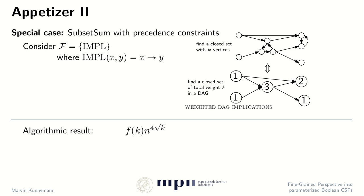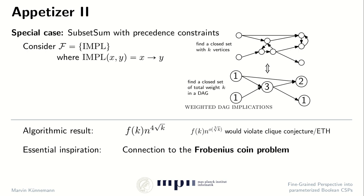For this problem we see a much faster than n to the K running time that is also not far from optimal. We could improve this square root of K dependence in the exponent to at best the cube root of K, unless the Klee conjecture or the exponential time hypothesis fails. Interestingly, here we will use a connection to a number-theoretic problem — the Frobenius coin problem — to which we will come later.